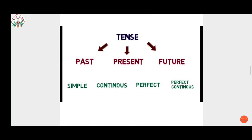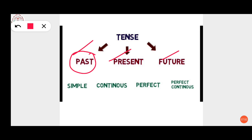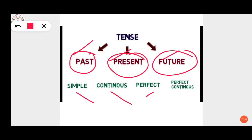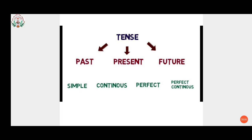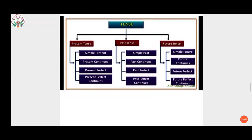Verbs change form according to the time of action. We have three tenses: present, past, and future. Each of these three tenses is divided into four categories: simple, continuous, perfect, and perfect continuous. I want to show you this in the next slide — that is your tense chart.